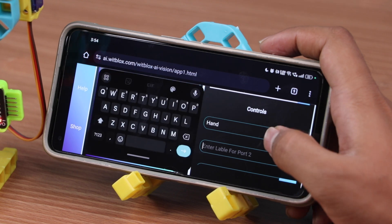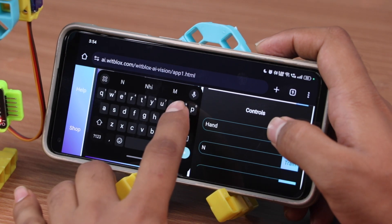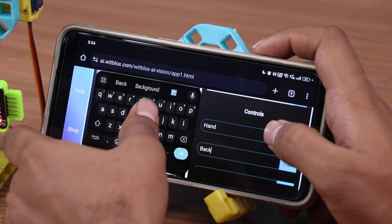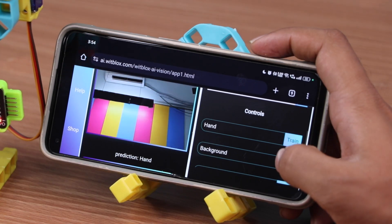Now enter background in port 2. Once entered, show a plain background in front of the camera and click train at least 20 times.